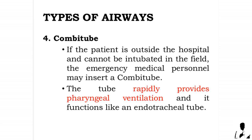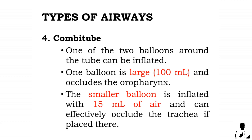If the patient is outside the hospital and cannot be intubated in the field, emergency medical personnel may insert a combi tube. It rapidly provides pharyngeal ventilation and functions like an endotracheal tube. One of two balloons around the tube can be inflated — the large balloon can be inflated with 100 milliliters of air and occludes the oropharynx, while the smaller balloon is inflated with 15 milliliters of air and can effectively occlude the trachea if placed there.